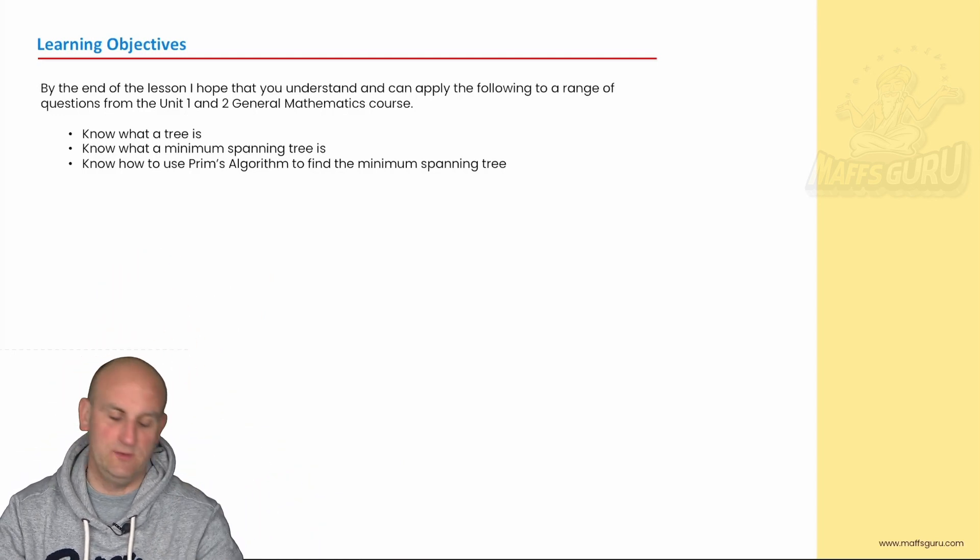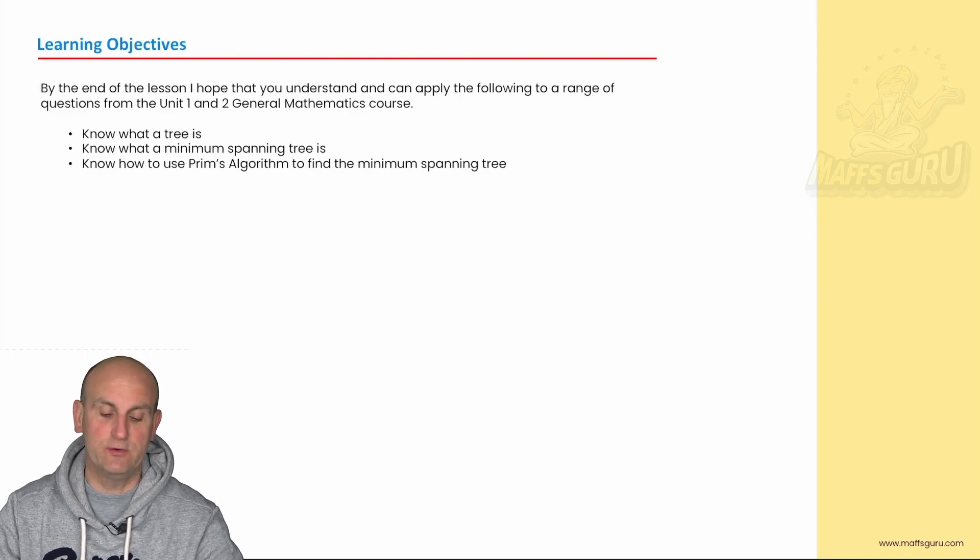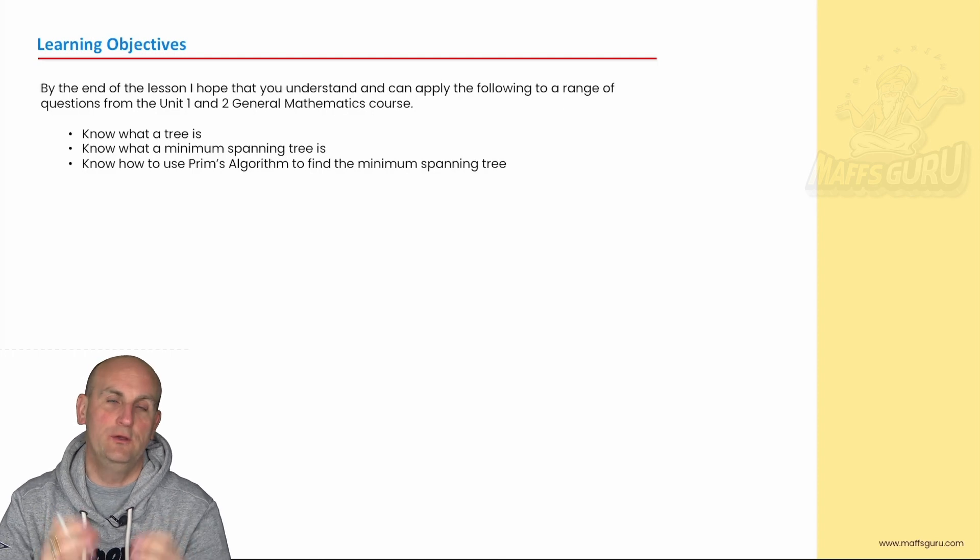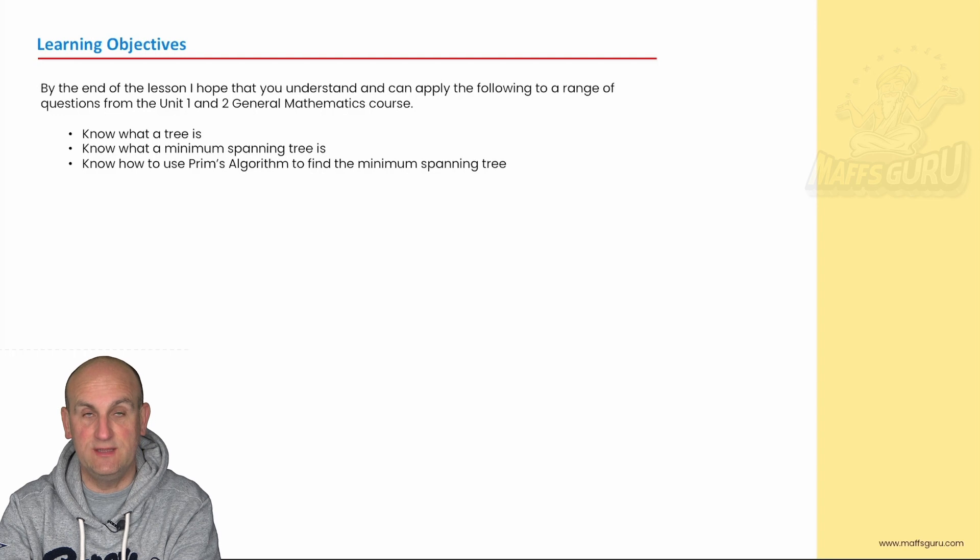Now what do I do? I talk about what I'm going to do in this lesson, learning objectives. We're gonna know what a tree is, we're gonna know what a minimum spanning tree is, and by then we're gonna use something called Prim's algorithm to find the minimum spanning tree. This is all useful for the General Maths course next year as well.